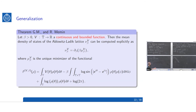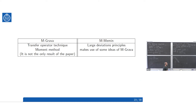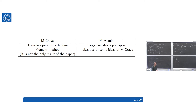The two proofs are quite different despite giving the same theorem. With Tamara we use the transfer operator technique combined with the moment method and also prove some additional results. With Ronan we use the large deviation principle technique, making use of ideas from previous results. I will spend a bit more time on the proof with Tamara since it may be more accessible.